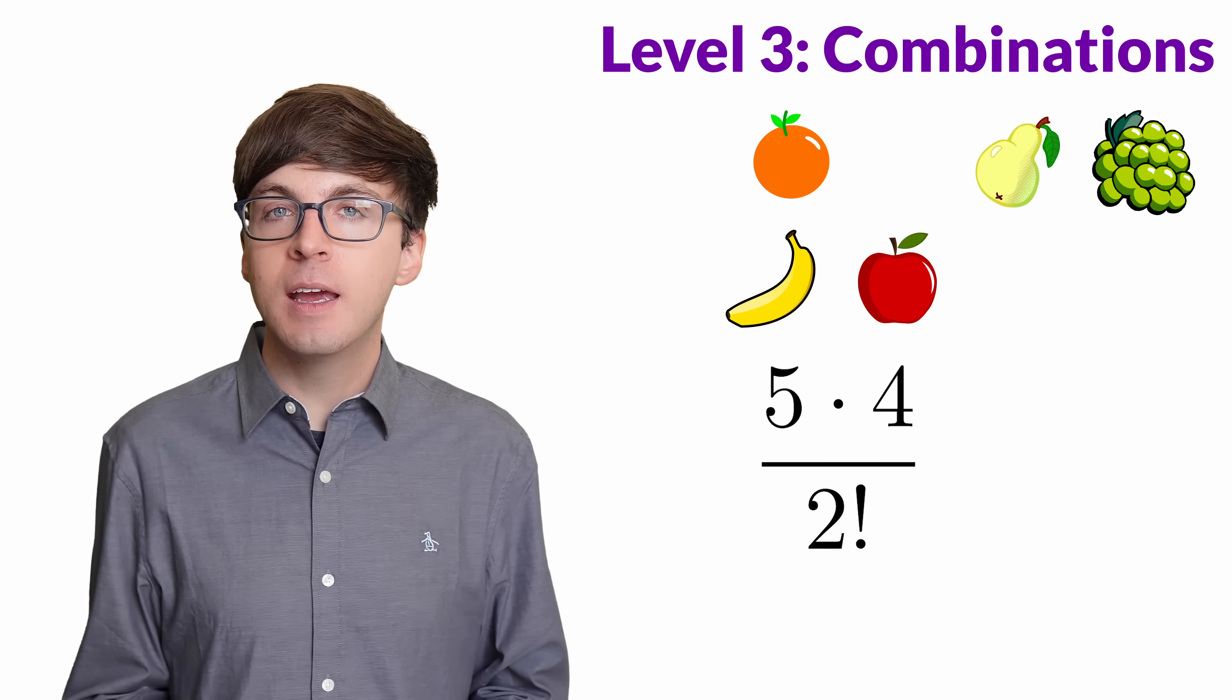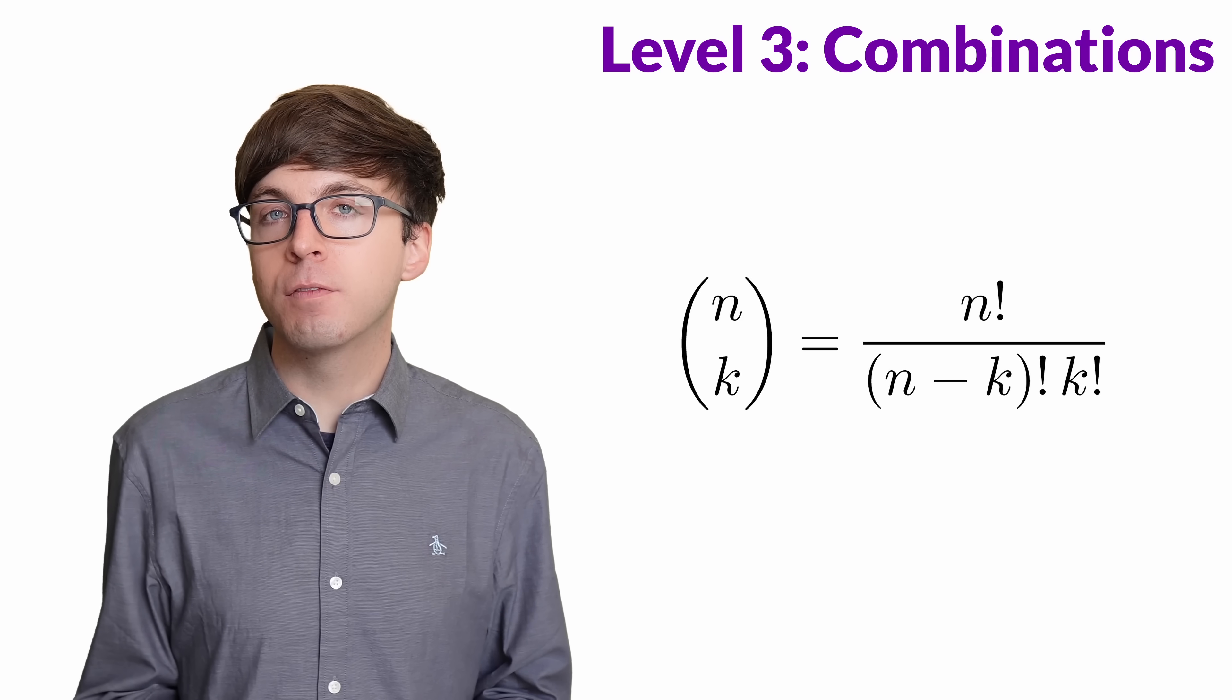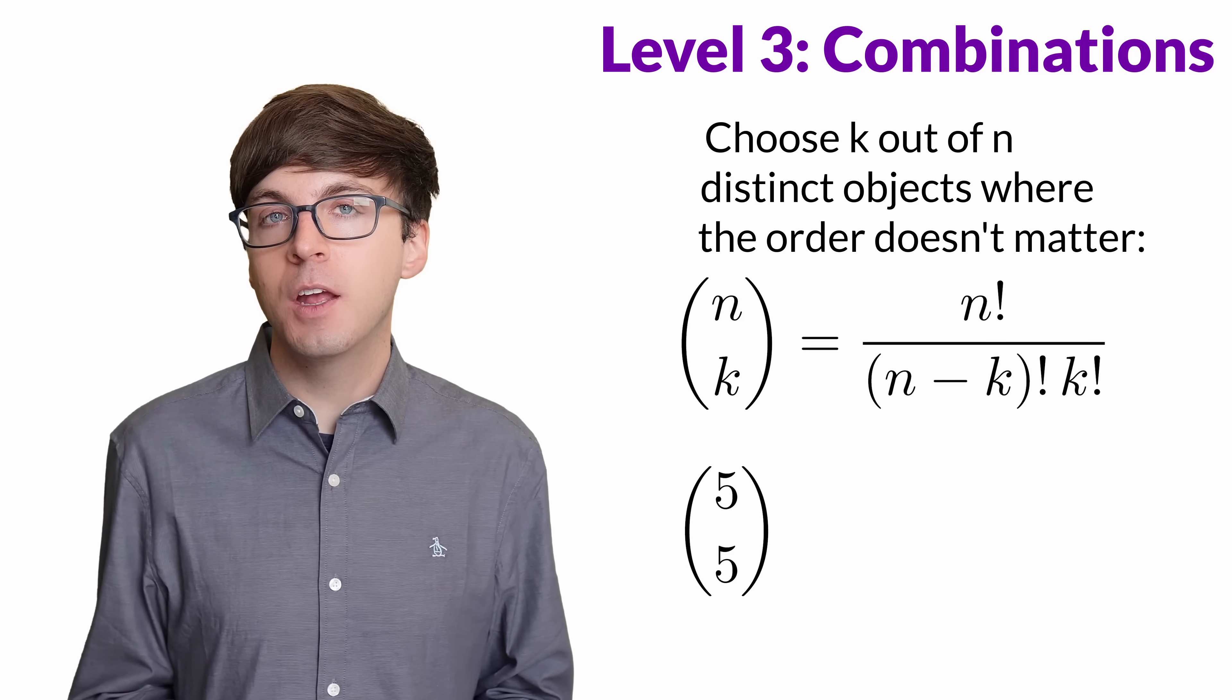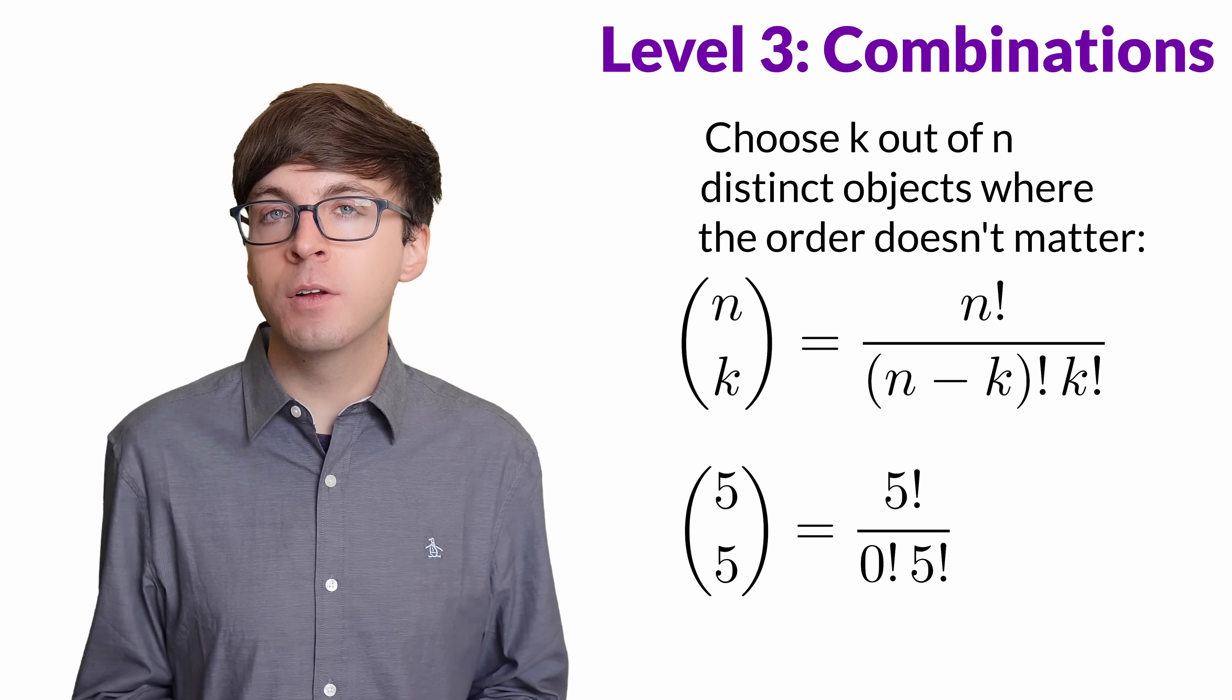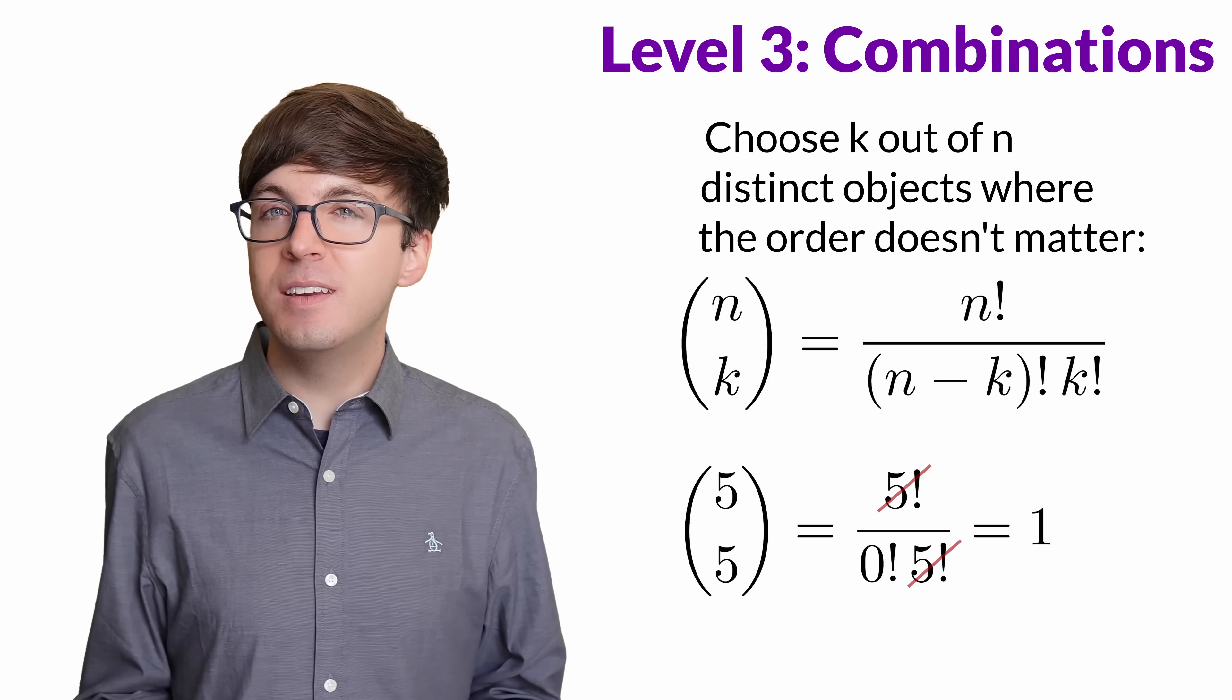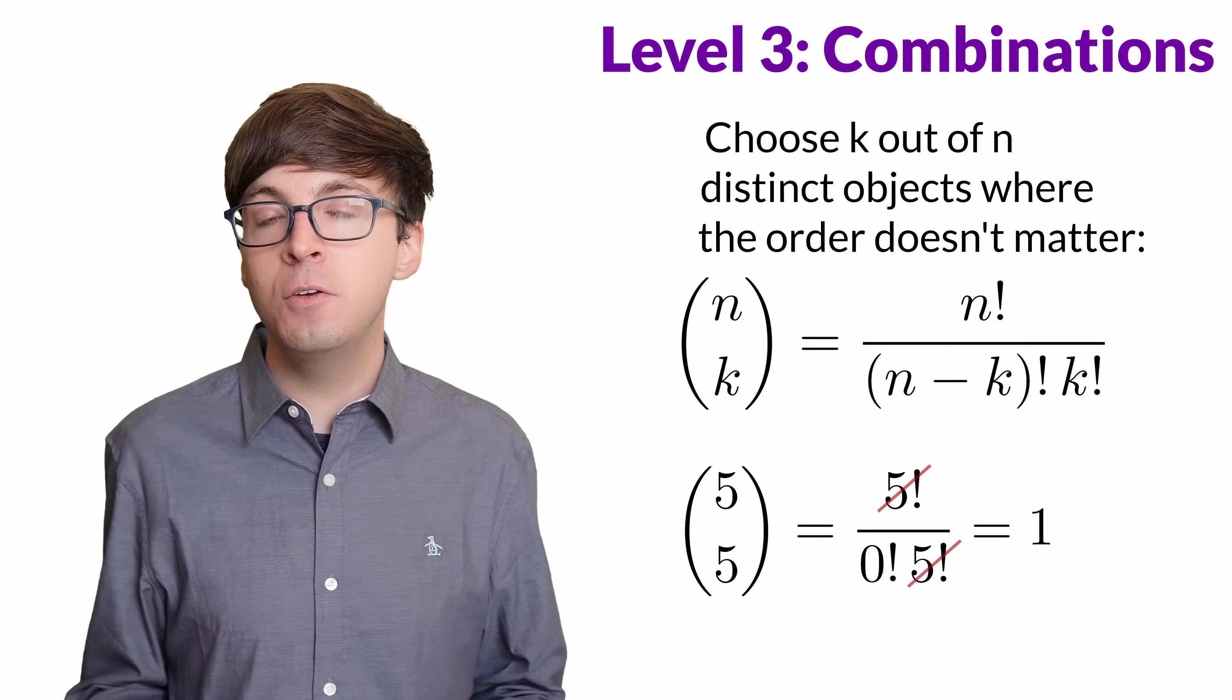This is called a combination, and often we would write it as 5 factorial divided by 3 factorial times 2 factorial, which is an equivalent formula. Here is the combination formula for choosing k out of n distinct objects, where the order doesn't matter. So what happens if we want to pick all 5 objects out of the 5 available? There's just one way to do that, to take all of them. The formula is 5 factorial divided by 0 factorial times 5 factorial. The 5 factorials cancel out, but we also want the 0 factorial to equal 1. If it didn't, we'd have to have a separate case for when we choose all of the objects or none of them. By defining 0 factorial to be 1, the combination formula continues to work in those cases.